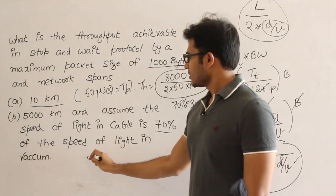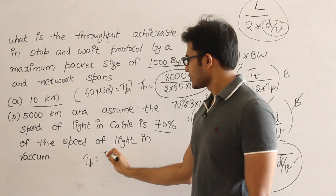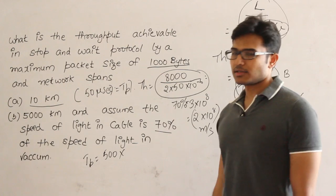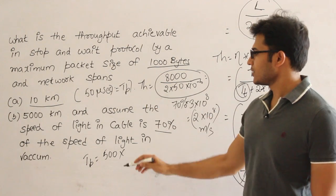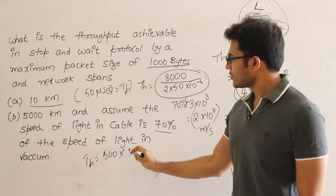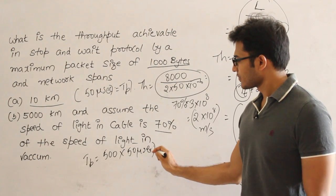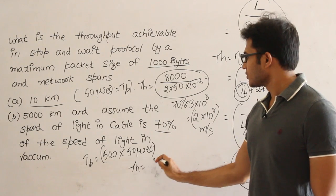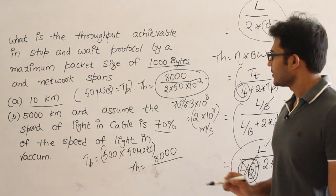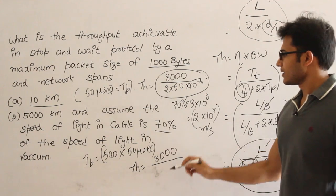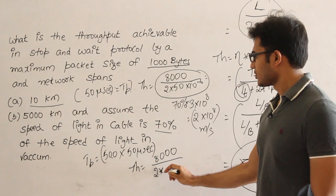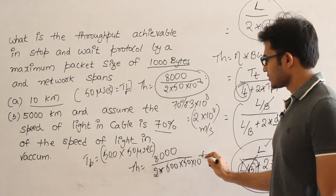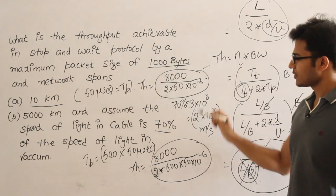For the second one B, propagation delay is 500 into, because it is 500 times the distance has increased 500 times. Therefore the second one propagation delay is 500 into 50 microseconds. This is the propagation delay. And therefore throughput equals 8000 divided by 2 into this number, 2 into 500 into 50 microseconds. So this is the answer for the second one. This is the answer for the first one.